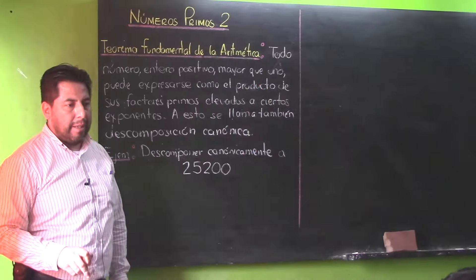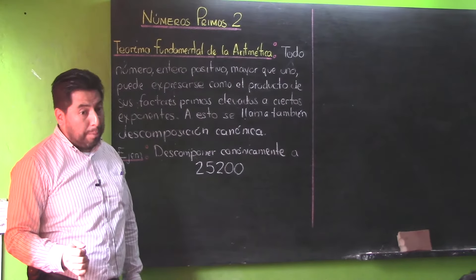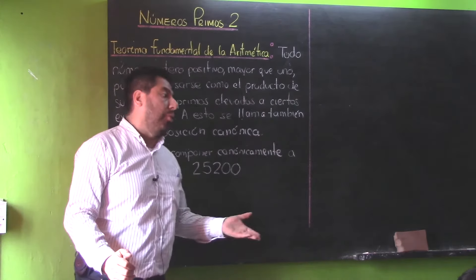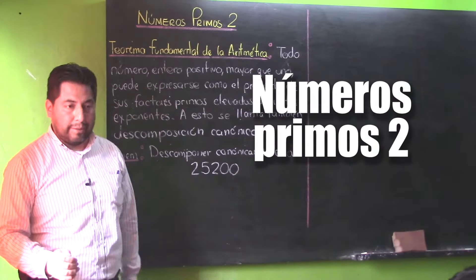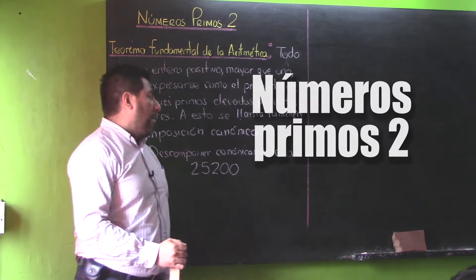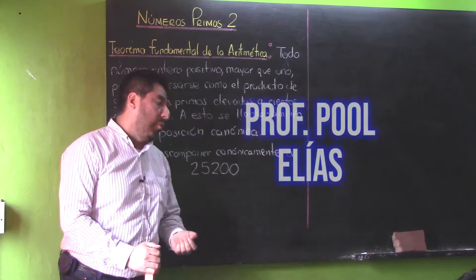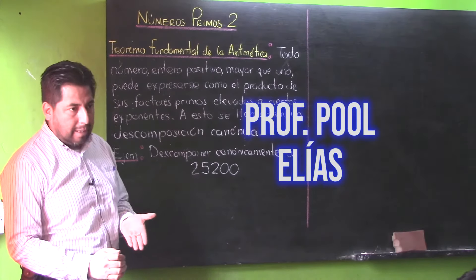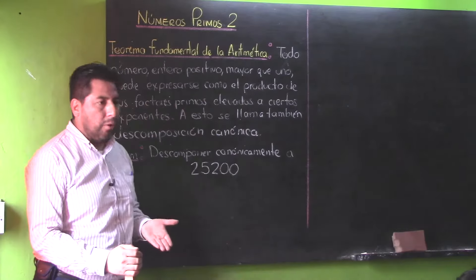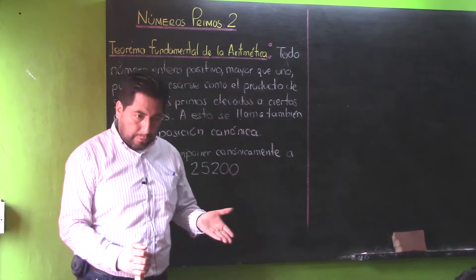La semana pasada habíamos hablado del estudio de los números primos, pero hoy toca ver básicamente el estudio de los números y sus divisores, la segunda parte. Esta es la continuación de la primera parte de números primos. La semana pasada habíamos definido lo que era un número primo, lo que era un número compuesto, lo que era un número simple, lo que era primos relativos.